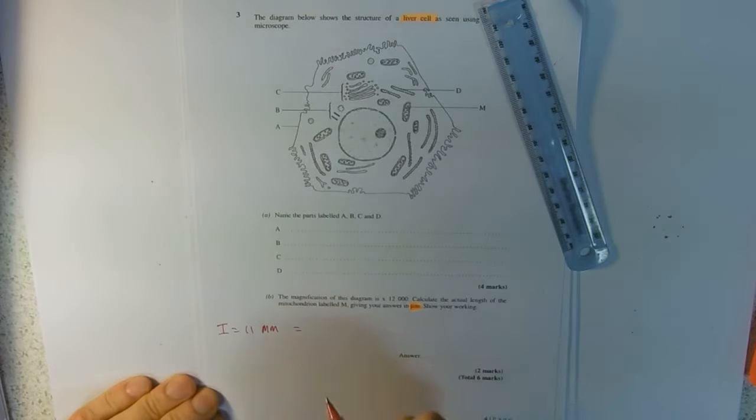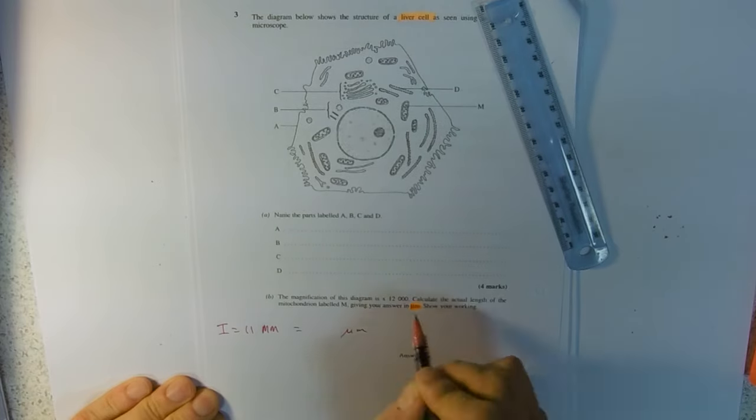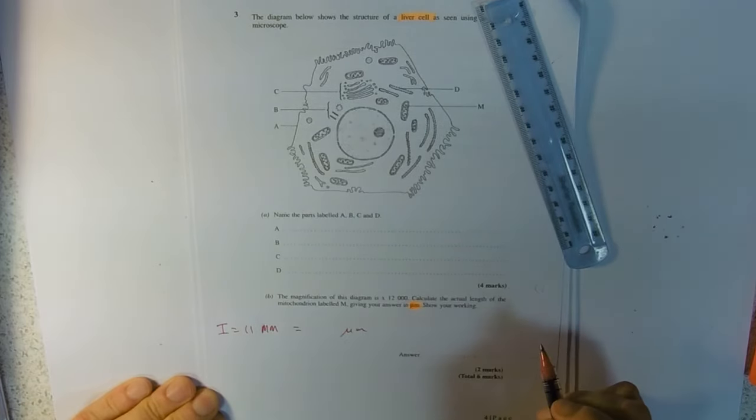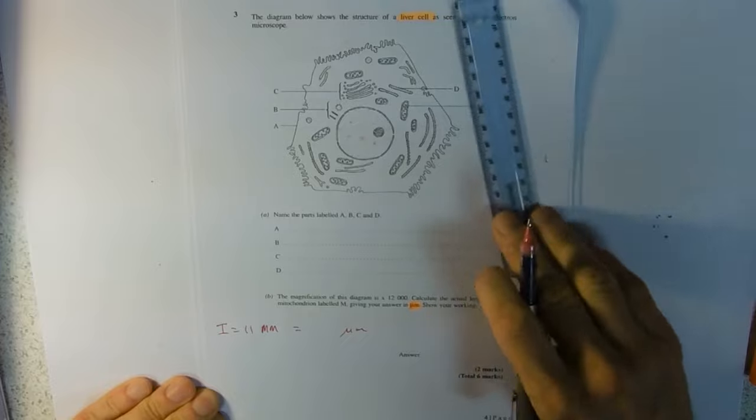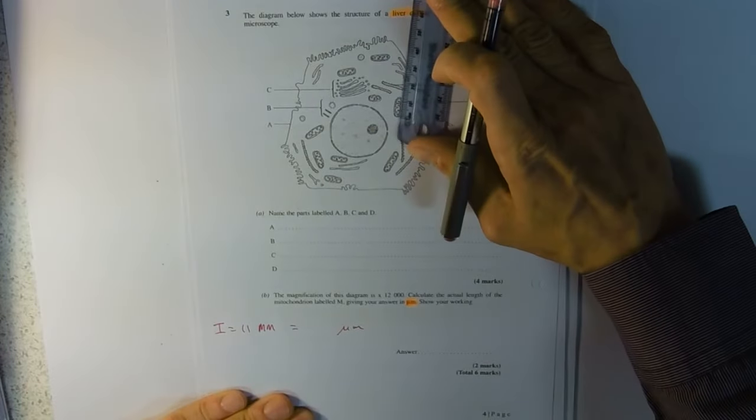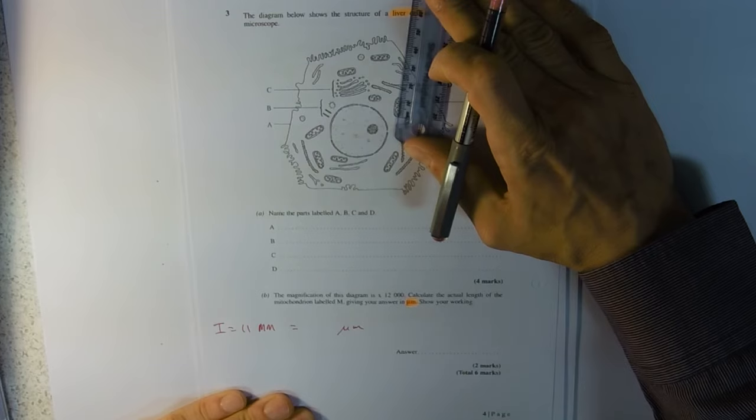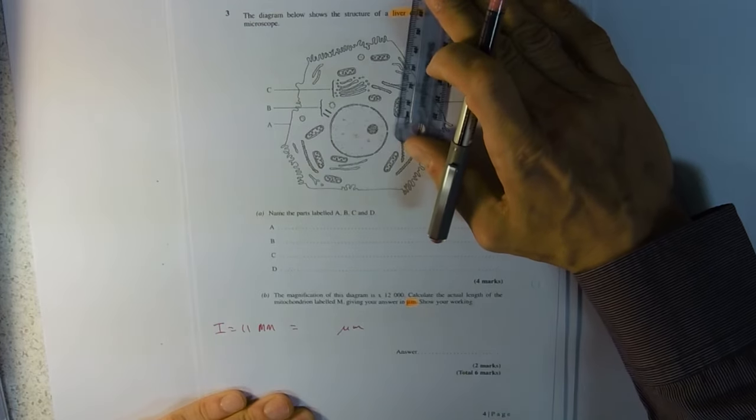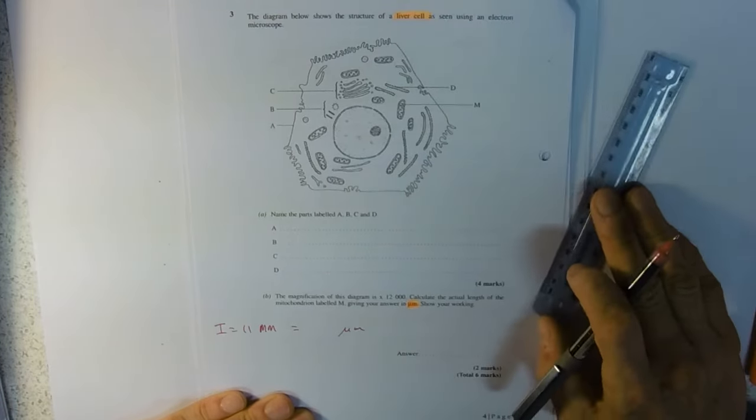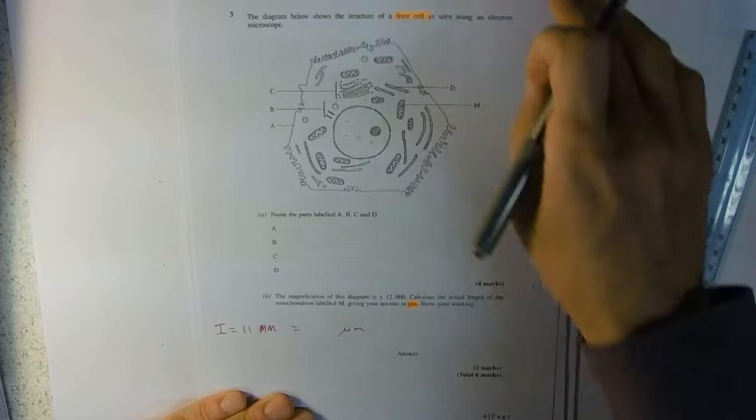My advice is to convert it to micrometers straight away and then divide it by 12,000. And if you've measured this and you decided it's actually 12, that's okay. One millimeter either way with the measurement won't matter too much.